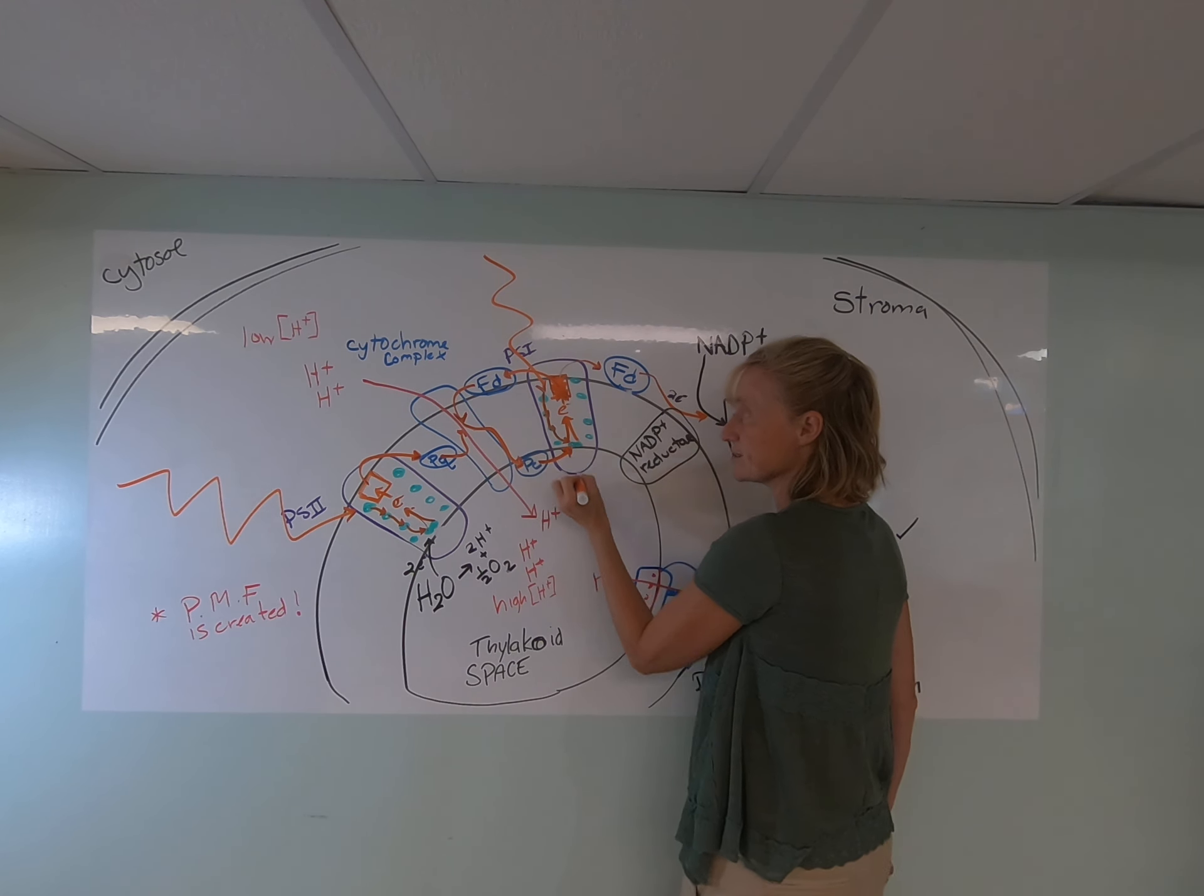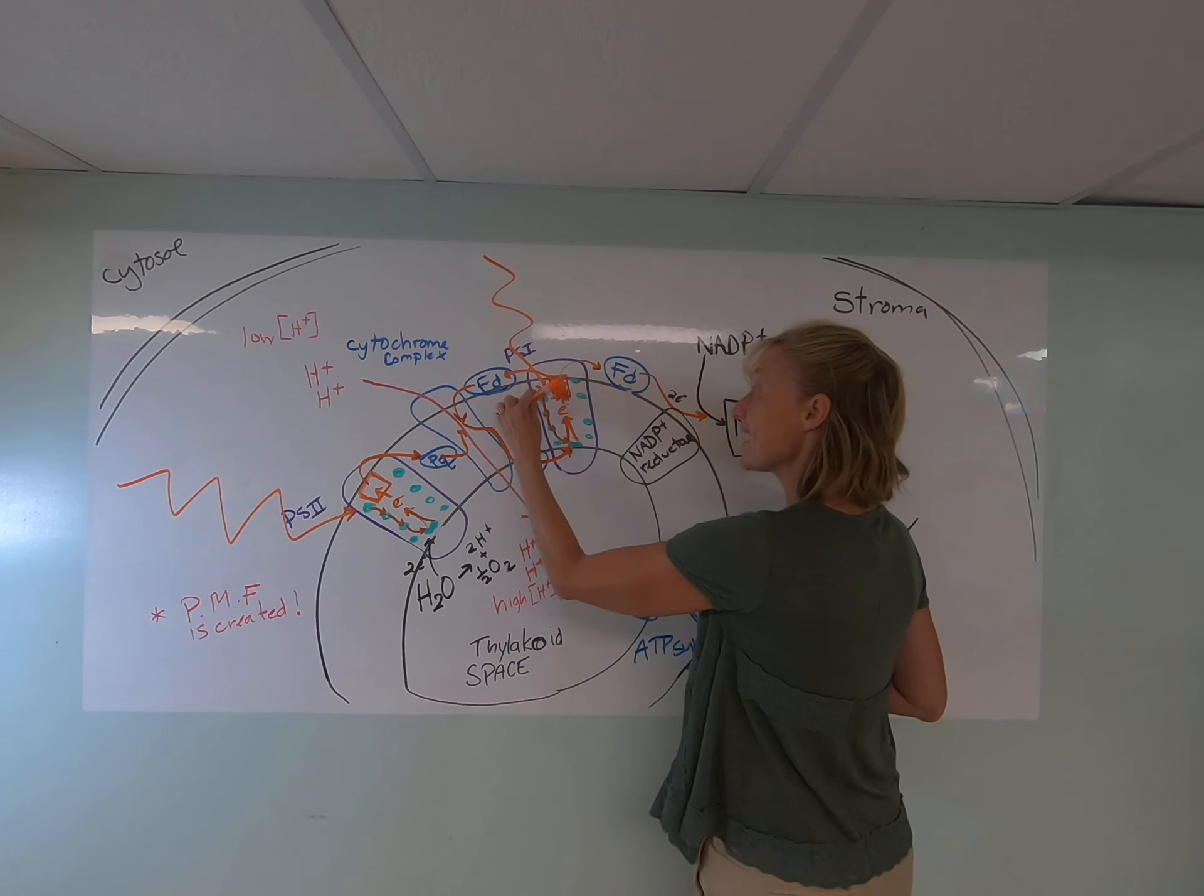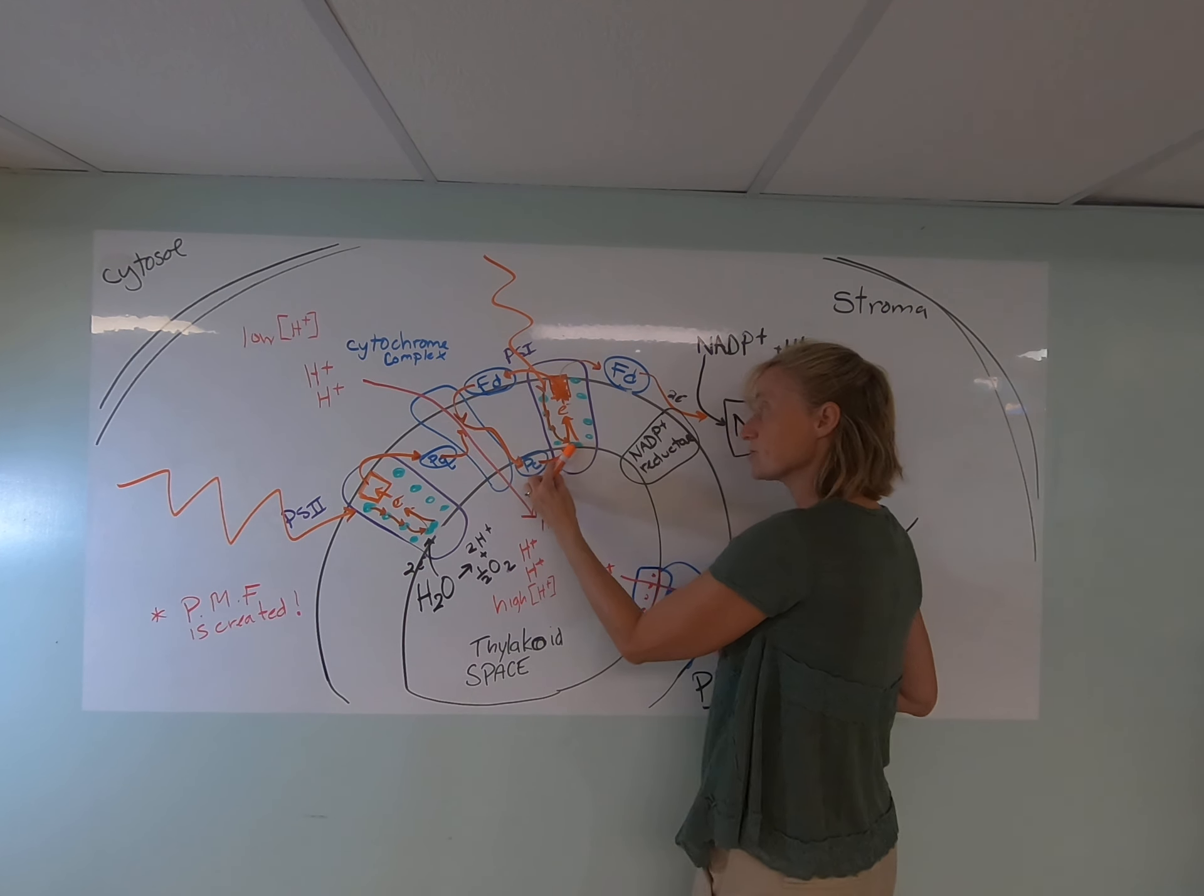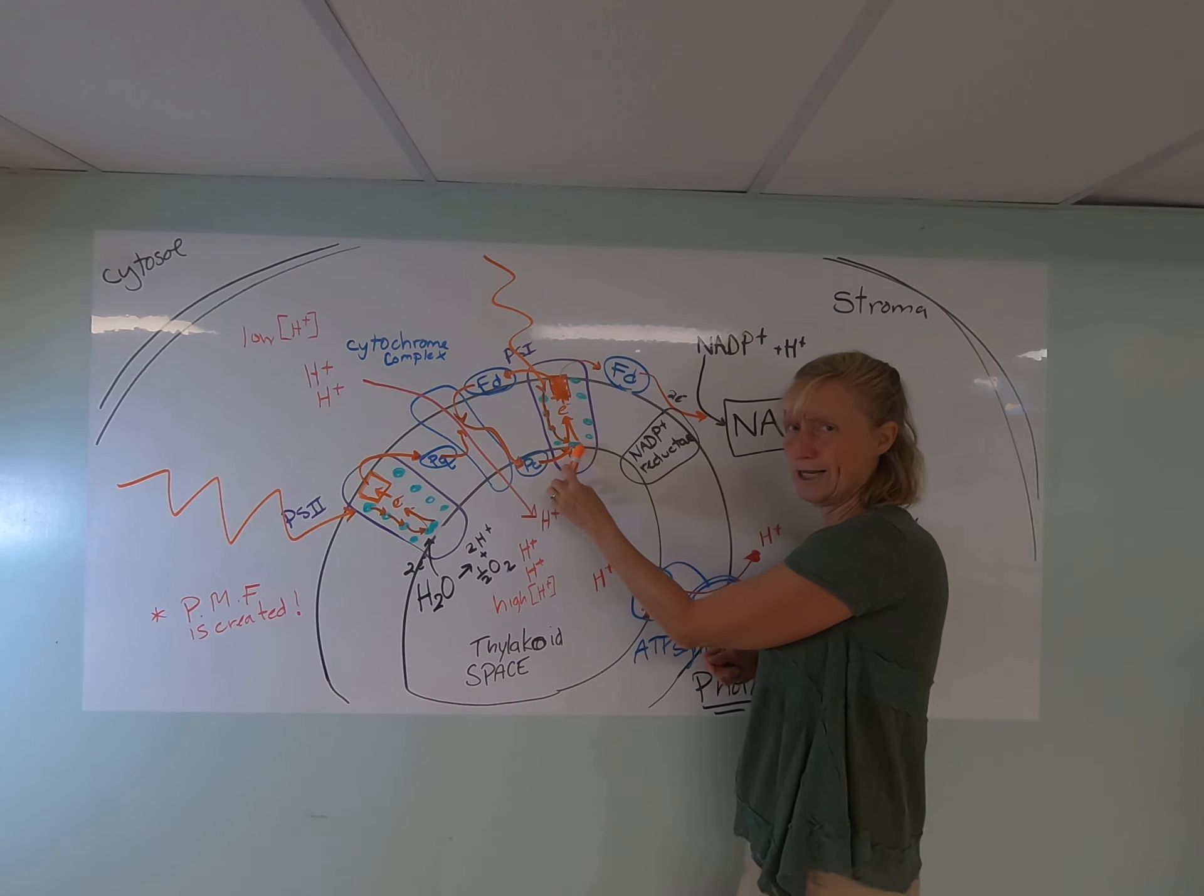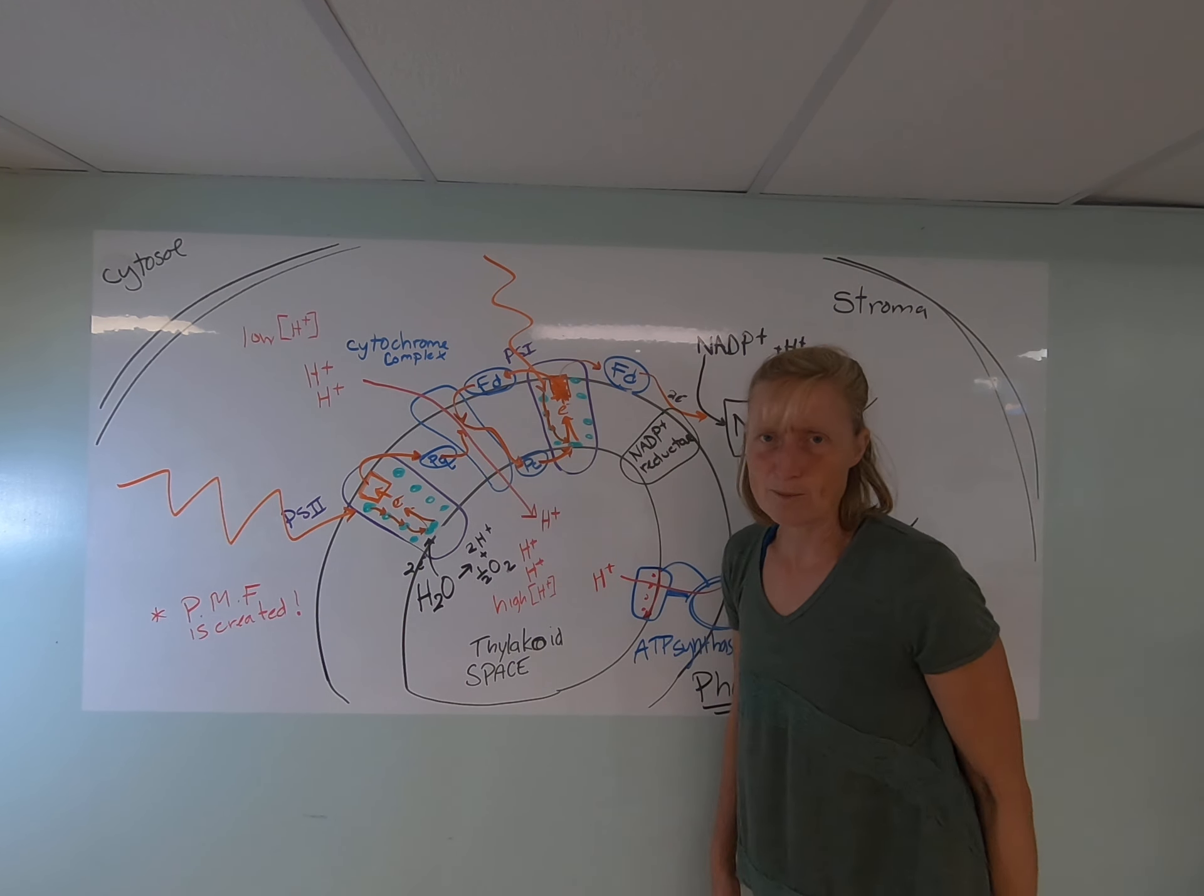and back to photosystem I in a circle. The electrons are excited by light energy. They flow to ferredoxin through the electron transport chain and back down to photosystem I. They're flowing in a circle. This seems kind of dumb. What does it do?